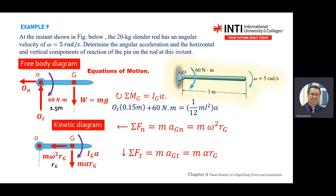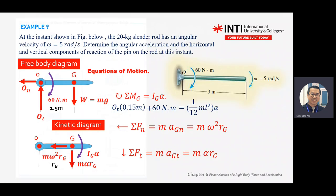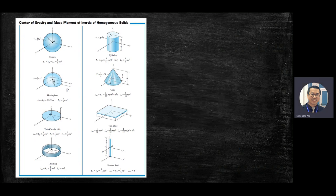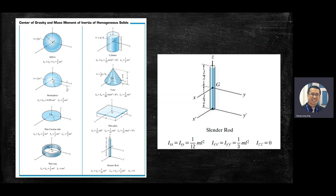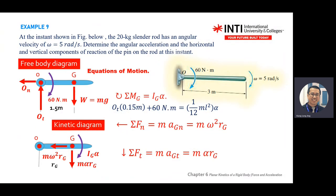How to get I_G? Refer to this body and look at the table. This is a rod, and for a rod the center of mass G is at the center. So you are referring to the x-y axes, not x'-y' or z. Copy that equation: the second moment is one-twelfth times M times L squared, where L is the length of the rod. Put that into your calculation to get I_G.